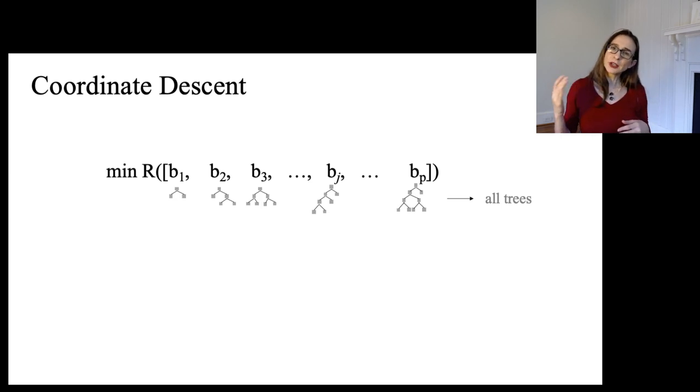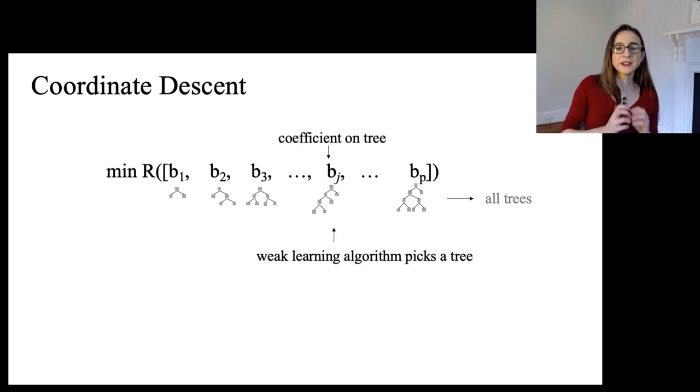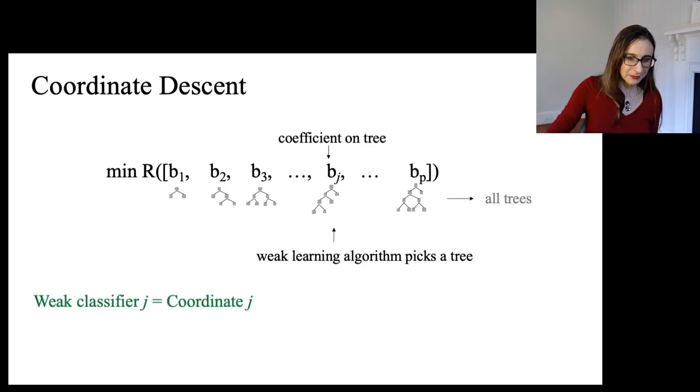And then what does it mean to walk along a direction in this space? Well, what it means is that you're adjusting the coefficient on a tree. So at every iteration, the weak learning algorithm picks a tree, and then AdaBoost adjusts its coefficient. So it's moving along this space to try to minimize the exponential loss over weighted combinations of these trees.